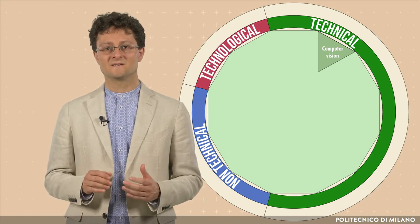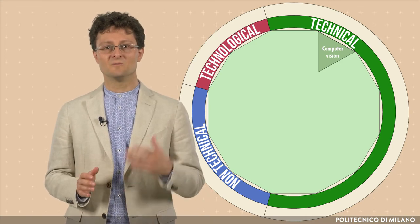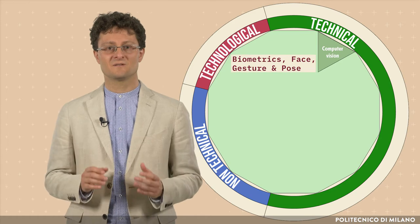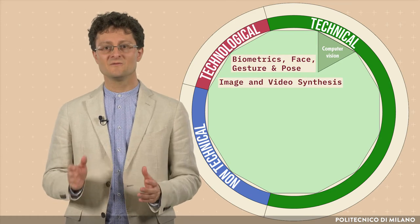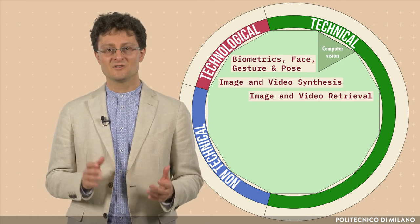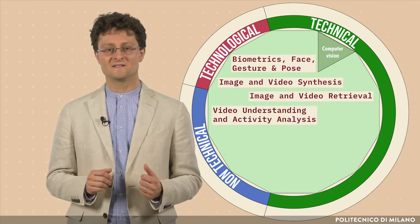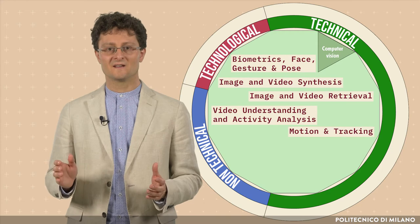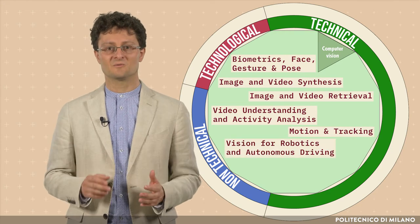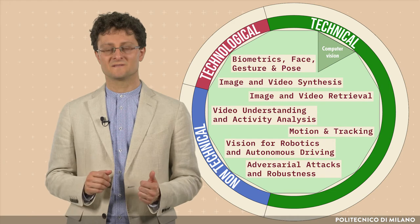Some domains of computer vision include biometrics, face, gesture and pose, image and video synthesis, image and video retrieval, video understanding and activity analysis, motion and tracking, vision for robotics and autonomous driving, adversarial attacks, and robustness.